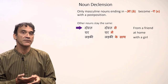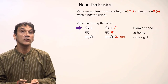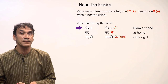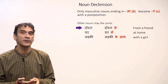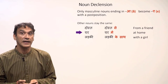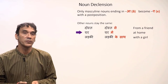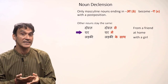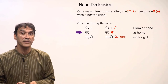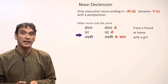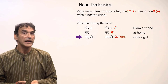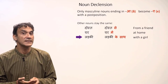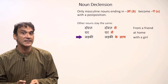Nouns that don't end in 'a' stay the same. 'Dost' (a friend) has no 'a' ending, so it stays 'dost' — 'dost se' means 'from a friend.' 'Ghar' (home) also stays the same — 'ghar mein' means 'at home.' 'Ladki' (a girl) is a feminine noun; feminine nouns in singular do not change — they stay the same.